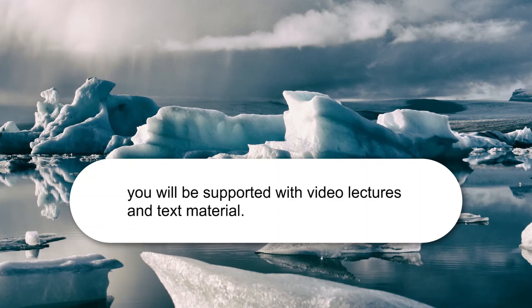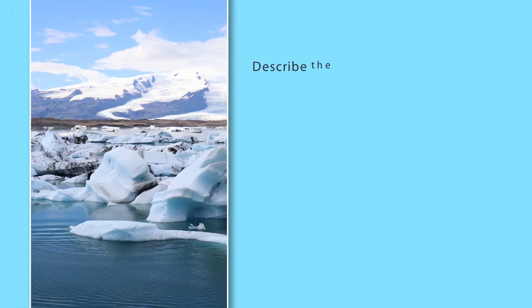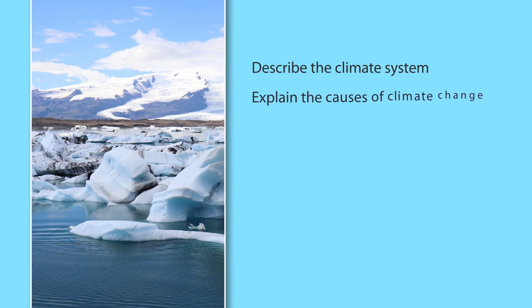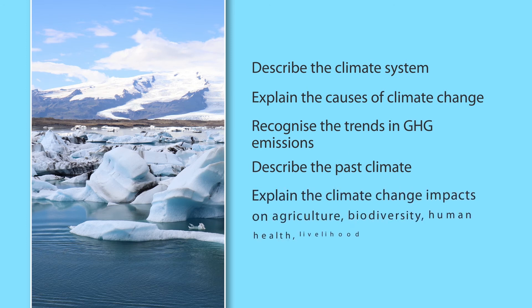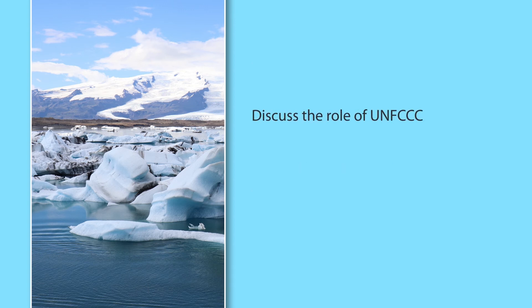As far as learner support is concerned, you will be supported with video lectures and also text material. On successful completion of this course, you should be able to describe the climate system, explain the causes of climate change, recognize the trends in greenhouse gas emissions, describe the past and present climate, explain the climate change impacts on agriculture, biodiversity, human health and livelihood, and discuss the role of the United Nations Framework Convention on Climate Change, the Paris Agreement, and the National Action Plan on Climate Change.